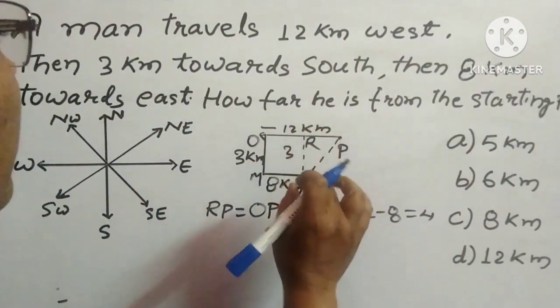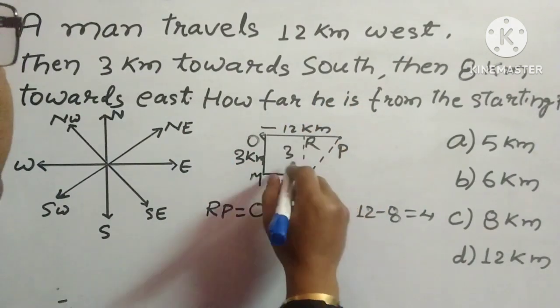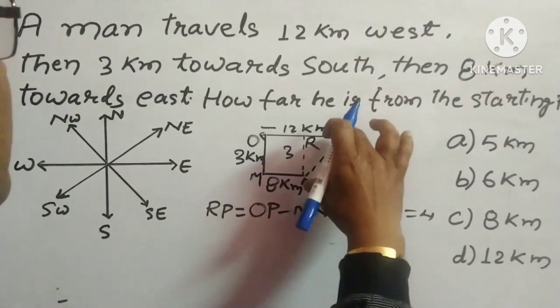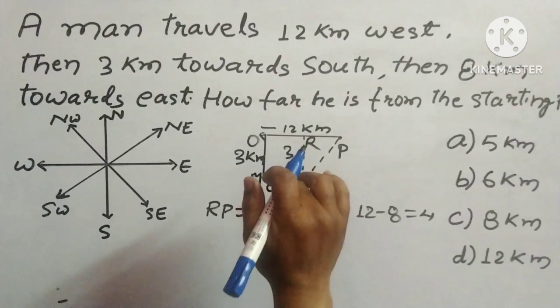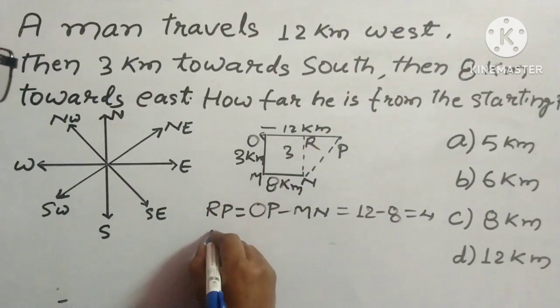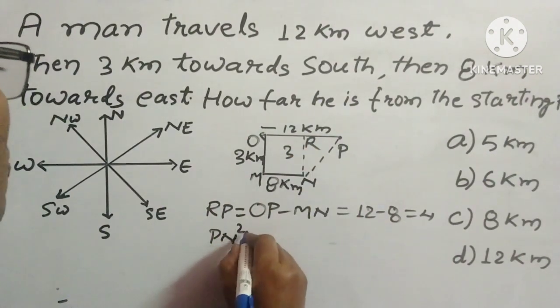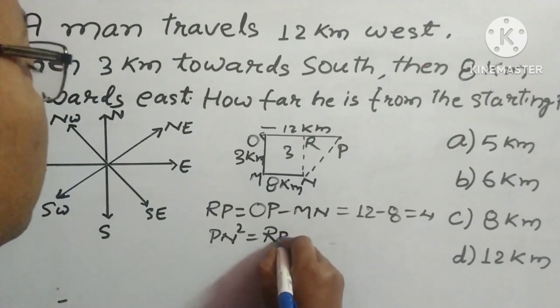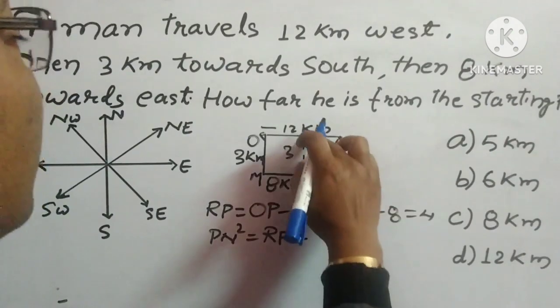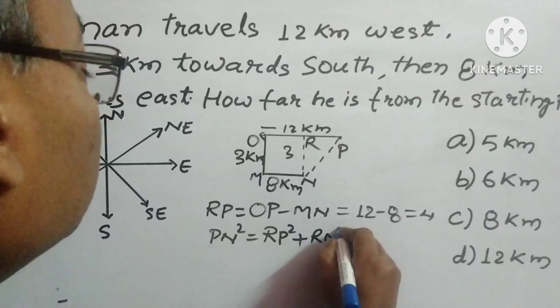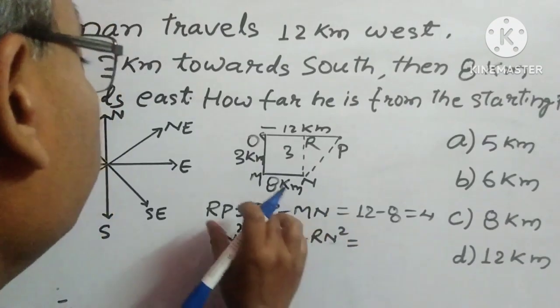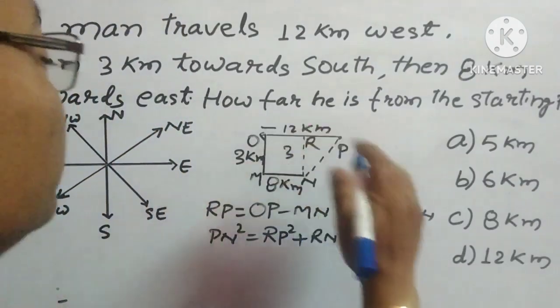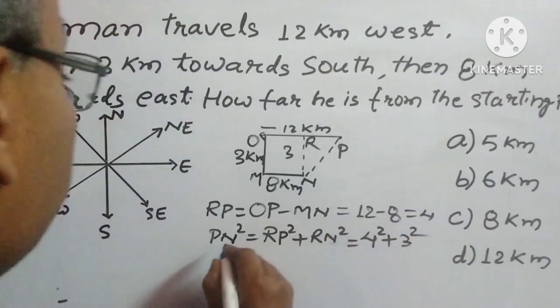So we have got RP = 4 and RN = 3. According to Pythagorean theorem, PN is the hypotenuse. So PN² = RP² + RN².